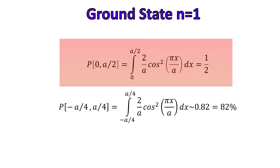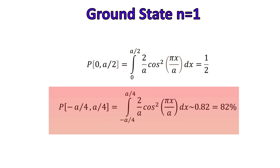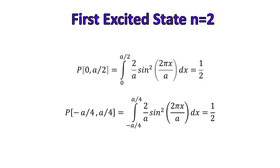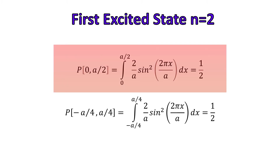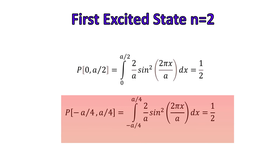The result of this integral is 0.5. The calculation of the probability of the particle being between −a/4 and a/4 is done in the same way, only changing the initial and final values of the integral, so the probability is approximately 82 percent. We repeat these calculations for the first excited state, taking the wave function where n = 2. For the particle between 0 and a/2 in the first excited state, the integral gives a result of 0.5. The probability of the particle being between −a/4 and a/4 also gives 0.5.